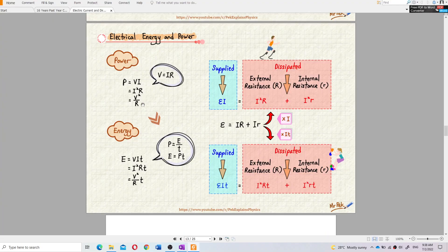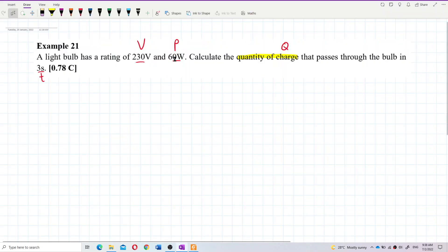We can use this formula: power equals voltage times current, or I squared R. P equals VI, I squared R, or V squared over R. So I think we can use the formula P equals VI to get the current.